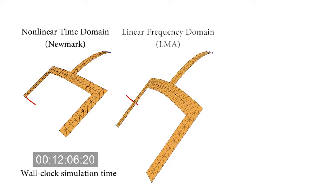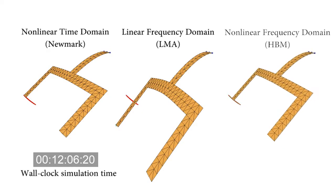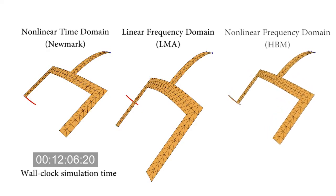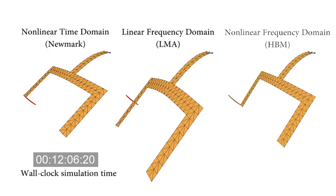Frequency domain methods can directly compute the steady-state solution, but linear approaches lead to severe artifacts for large amplitude oscillations. The harmonic balance method is a nonlinear frequency space method that is able to accurately predict large amplitude periodic motion.